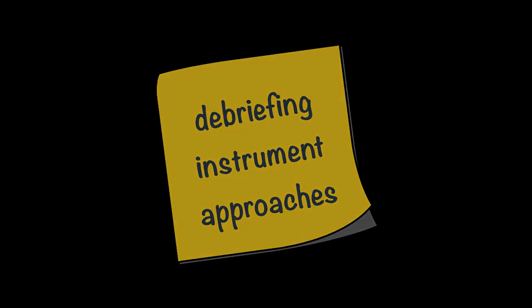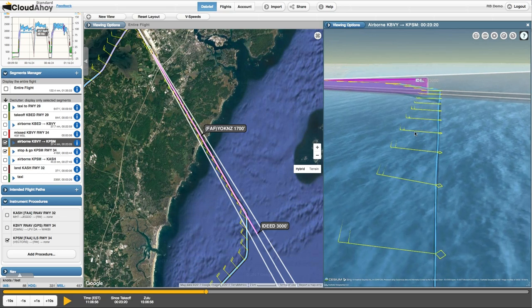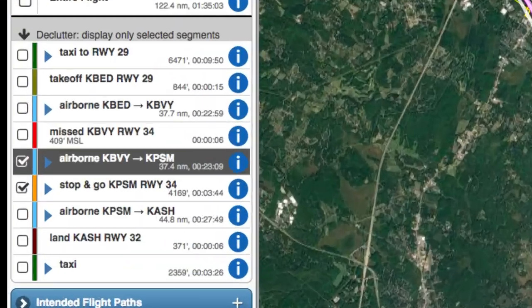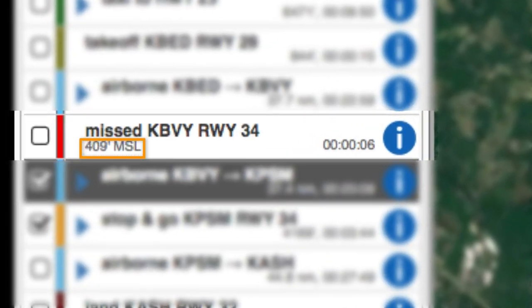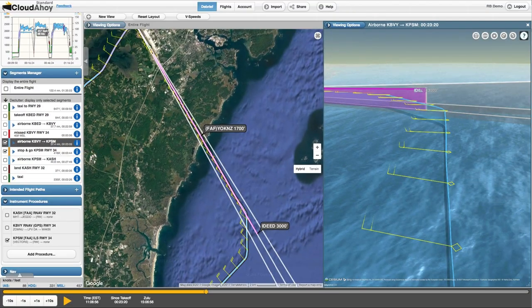When debriefing instrument approaches, Cloud Ahoy automatically identifies your missed approaches and shows you the altitude where each missed was taken. You can review your flight path versus the published approach.